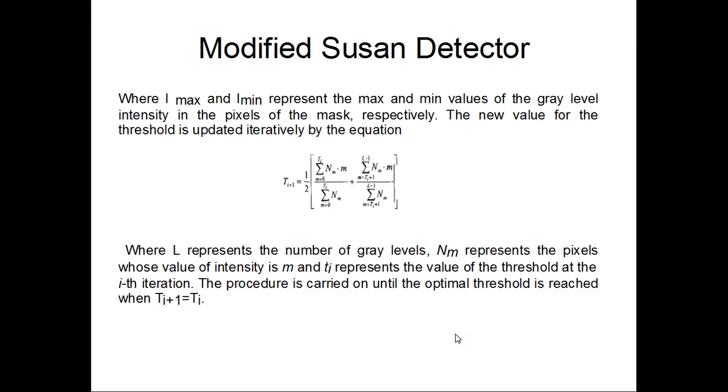The new value for the threshold is updated iteratively by the equation which is given by this, where L represents the number of gray levels and M represents the pixels whose value of intensity is M. And T_i represents the value of the threshold at the i-th iteration. This procedure is carried on until the optimal threshold is reached when T_(i+1) = T_i.